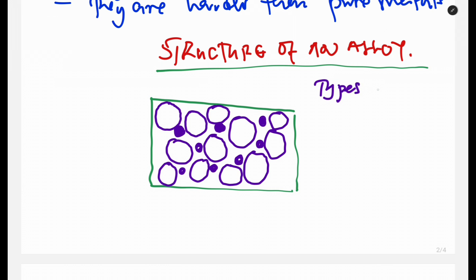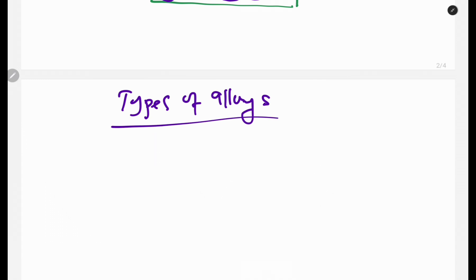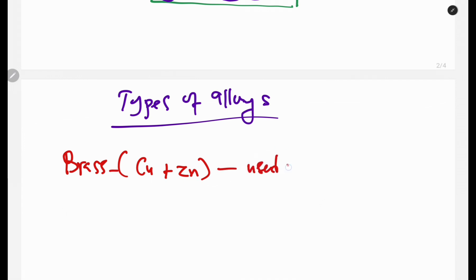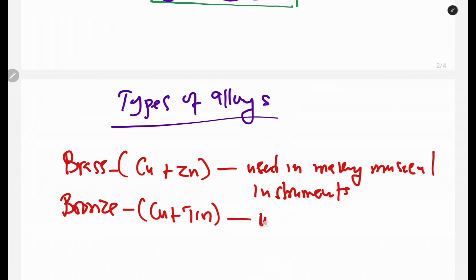Now let us look at types of alloys. The first is brass, which is an alloy of copper and zinc. It is used in making musical instruments. The second is bronze, which is an alloy of copper and tin. It is used in making trophies.